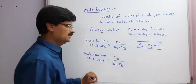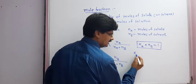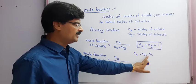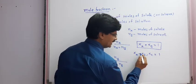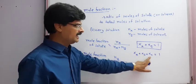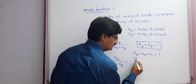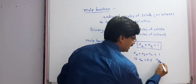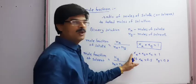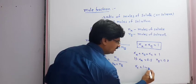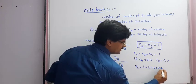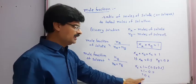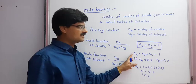Now in a solution, if there are XA, XB, and XC — meaning mole fractions of A, B, and C — then XA plus XB plus XC is equal to 1. According to this rule, if mole fraction of A is 0.5 and mole fraction of B is 0.3, then using this formula we can find mole fraction of C: 1 minus (0.5 plus 0.3) equals 1 minus 0.8, so mole fraction of C will be 0.2.